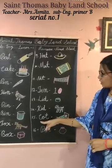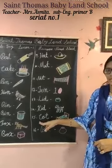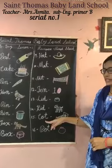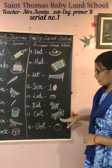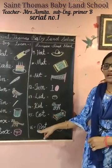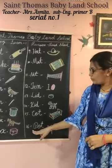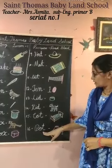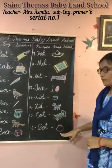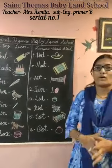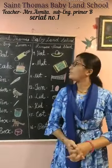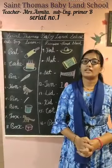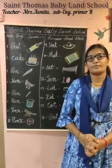The next is cot. C, O, T — cot. And the last one is pot. P, O, T — pot. Now all our revision — this read aloud, lesson number one.